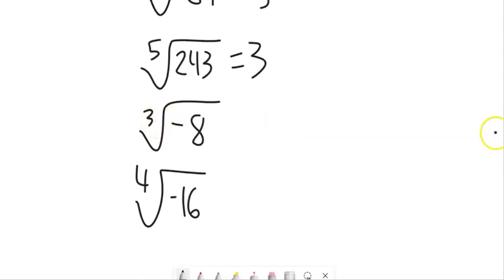How about this? What to the third power would give me negative 8? And I know that if it was just an 8, this would be a 2. But this is kind of weird. With the third power, I can go negative 2, right?